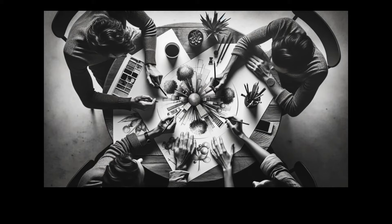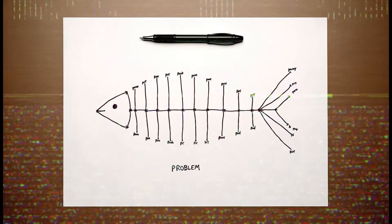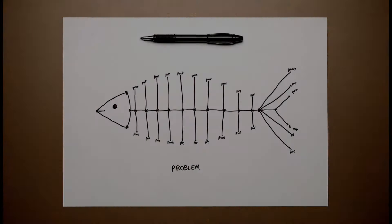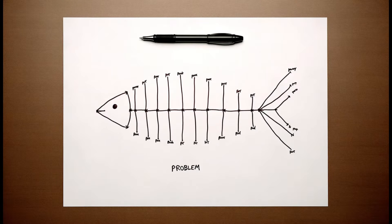Let's now move into creating a fishbone diagram. You don't have to be an artist or an expert in drawing — the simplicity of this tool is what makes it so appealing. Grab your pen and paper. In the world of decision-making, you need to hook the right cause. The Ishikawa diagram helps you identify those sneaky culprits that often swim beneath the surface, causing ripples in your plans.